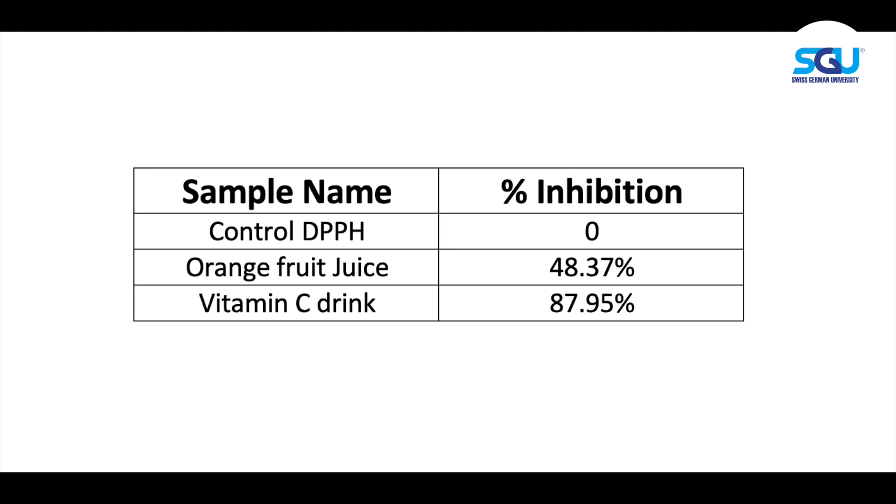Here is the percent inhibition data. From this data, it is shown that the commercial vitamin C sample has higher inhibition, even though it has been diluted by 25%. As a conclusion, the antioxidant activity of vitamin C is higher than fruit juice.